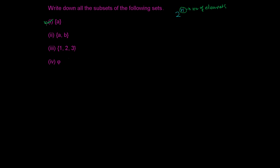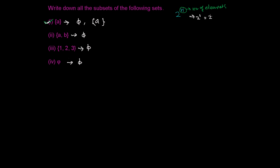In the first question, there is just one member, so how many subsets are possible? Two to the power one — that is two subsets. I had already told you that every set has at least one subset, and that is phi. Phi is the subset of every set. So this set also has phi as a subset, and the next subset is just the element itself written in curly brackets. So we got two subsets: one is phi, and the other is the element in curly brackets.